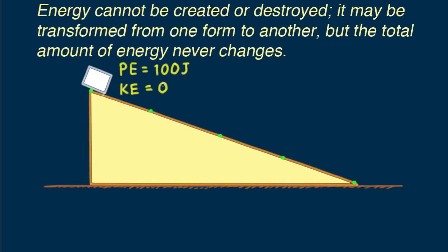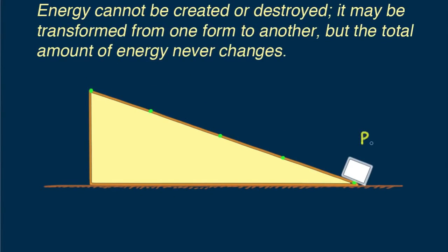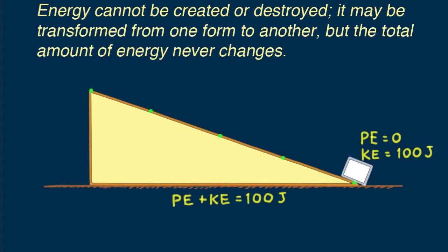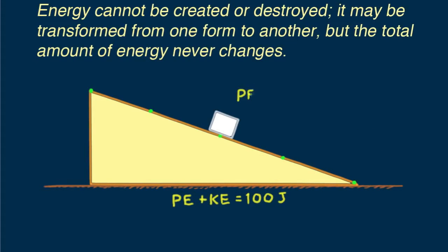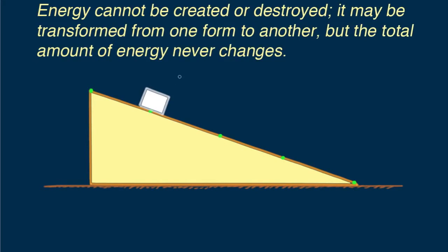Since the potential energy at the top is 100 joules, the potential energy at the bottom is zero. That means the kinetic energy at the bottom must be 100 joules. The total energy is the same at each location — the sum of potential energy plus kinetic energy equals 100 joules. Halfway down the plane, potential energy is 50 joules and kinetic energy is also 50 joules. One quarter of the way down, potential energy is 75 joules and kinetic energy is 25 joules, because 75 plus 25 equals the total energy of 100 joules.